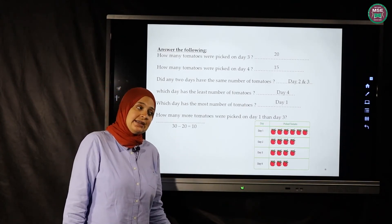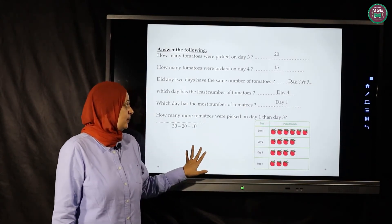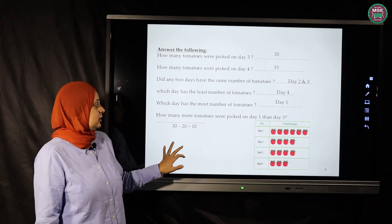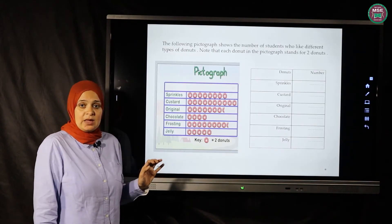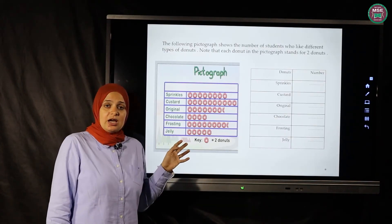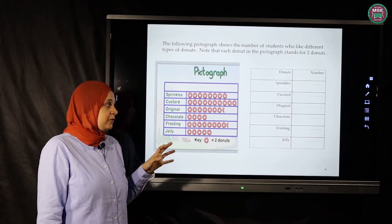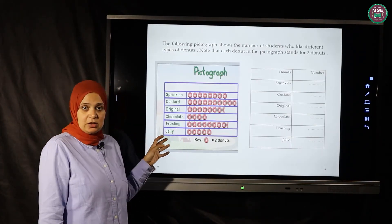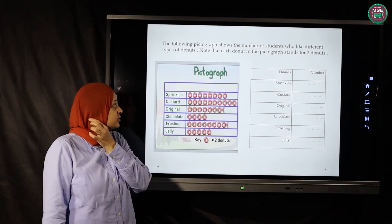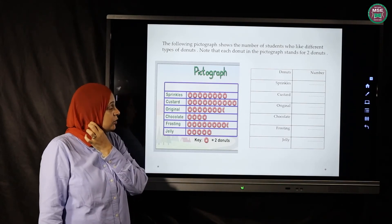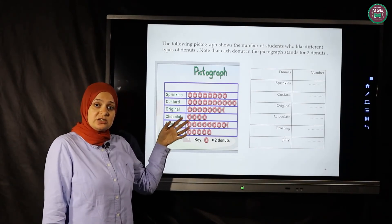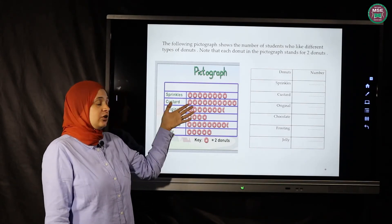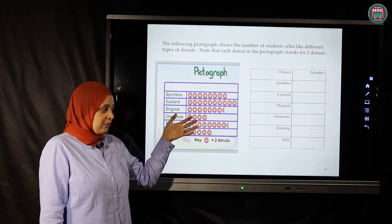How many more tomatoes were picked on day one than day three? The word 'more' means we subtract. Day one has thirty, day three has twenty — thirty minus twenty equals ten.